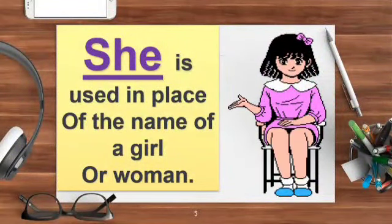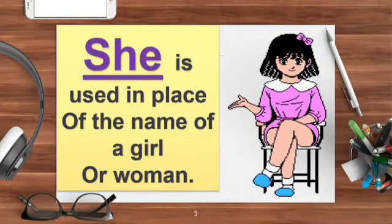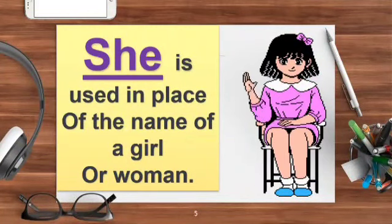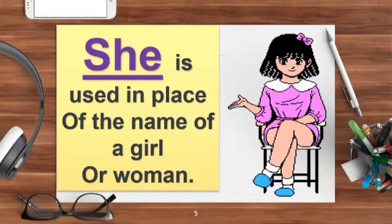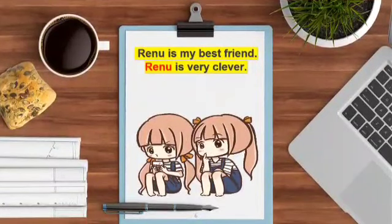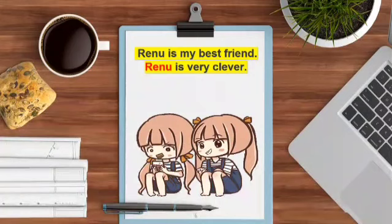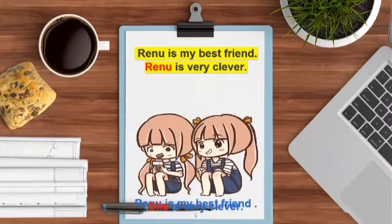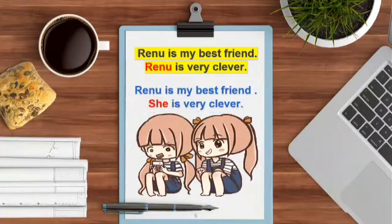Children, as we already know, in the first sentence, Renu is a noun. But we have repeated the word Renu in the second sentence. So we can replace it with a pronoun. Renu is my best friend. She is very clever.